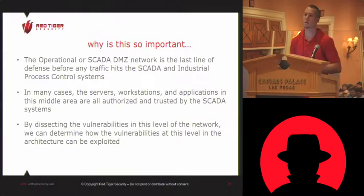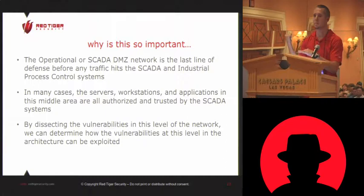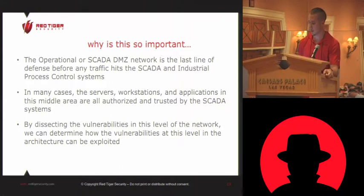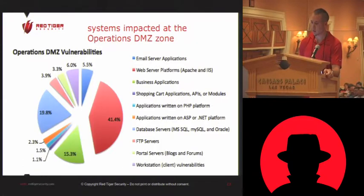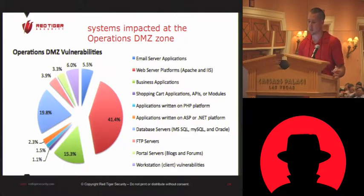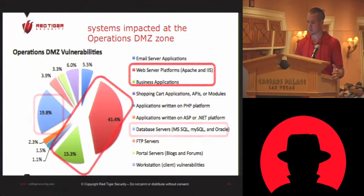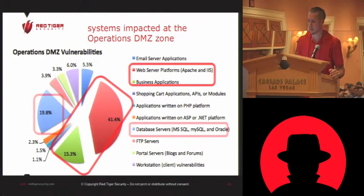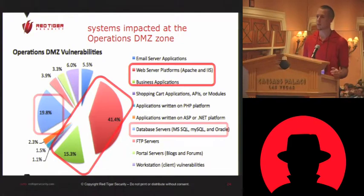We took apart the vulnerabilities at the middle layer to see what types were there. Looking at over 18,000 vulnerabilities, we broke them down by the types of systems they were found on. Over half were on web servers, business applications, and database servers — which we assumed would be the case, since that's the function that part of the network serves. You're logging data, so there are lots of database servers; you're pushing and displaying data, so there are lots of web portals.